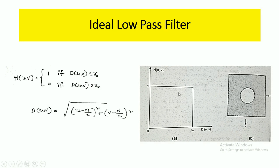Here, if you see this image, it shows the characteristics of the ideal low pass filter. The cutoff frequency is represented by r-naught. This ideal low pass filter suppresses all frequencies higher than r-naught and leaves smaller frequencies unchanged. It allows signals with frequencies less than r-naught and blocks frequencies above r-naught.